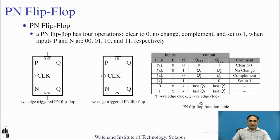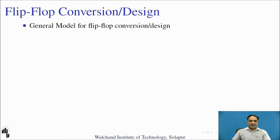The function table is always helpful for deriving the characteristic table of the PN flip-flop. On the left-hand side you will see two symbols: the first is the positive-triggered PN flip-flop and the second is the negative-triggered PN flip-flop.